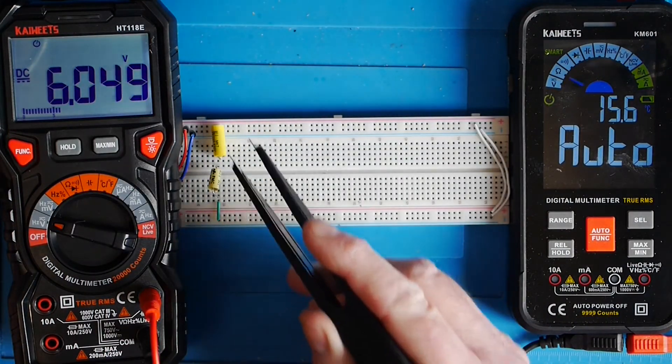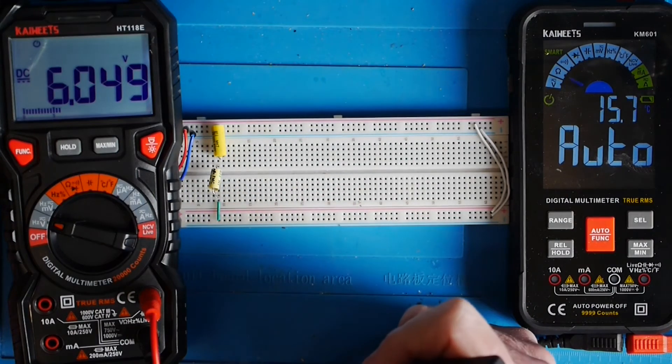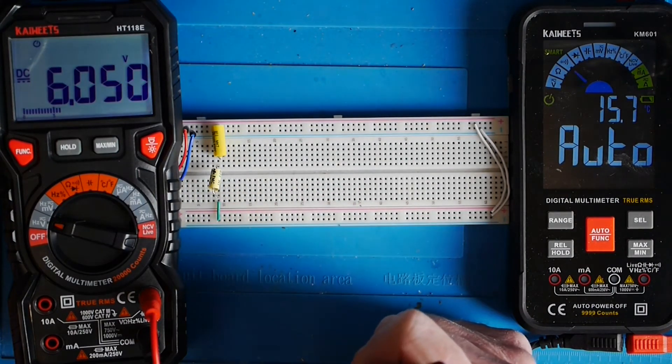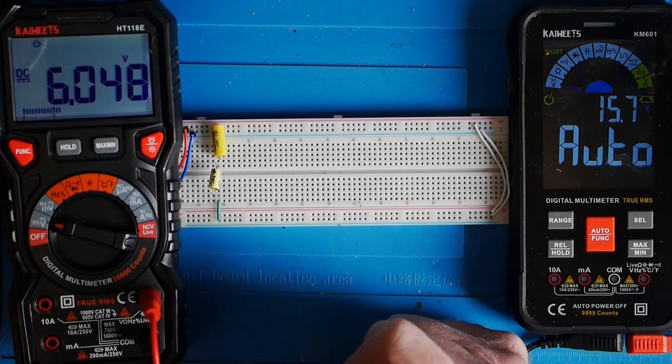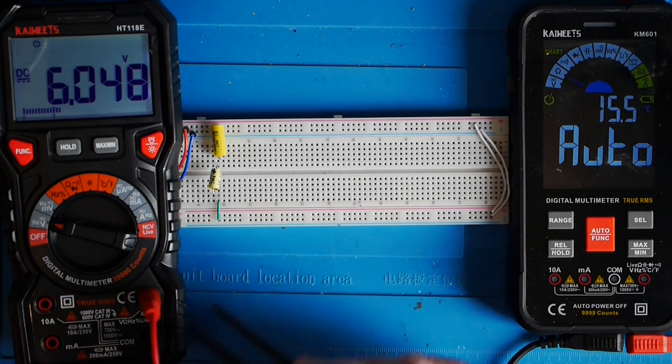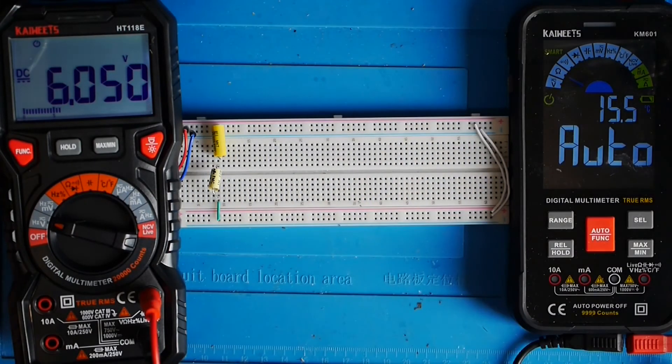What have we got across this bottom capacitor? As you can see, we haven't got anything, which is exactly what you'd expect, isn't it? Because as far as that DC is concerned, these two capacitors are just open circuit because they're just two unconnected plates. That's DC. Let's try AC.